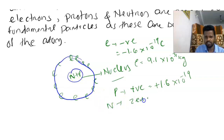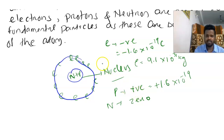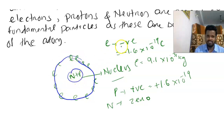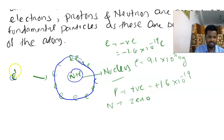We know that the neutron is a neutral particle and its charge is zero. The electron is negative and the proton is positive. Because of the condition of electrical neutrality, this atom is stable. The electrical neutrality is maintained.